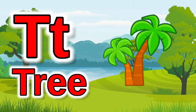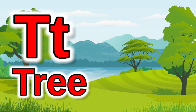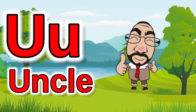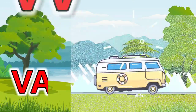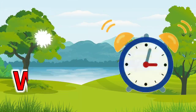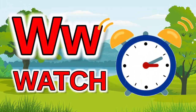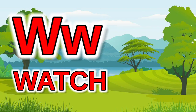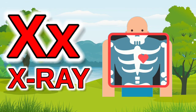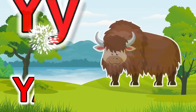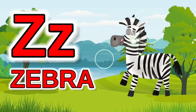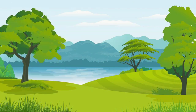S for sun, T for tree, U for uncle, V for hen, W for watch, X for x-ray, Y for yak, Z for zebra.